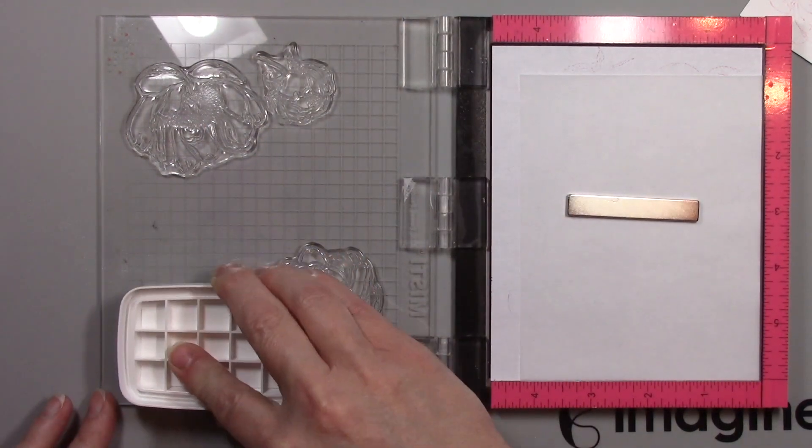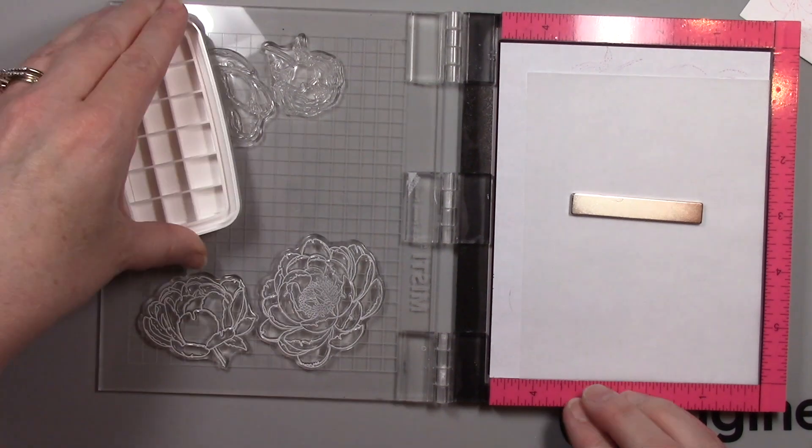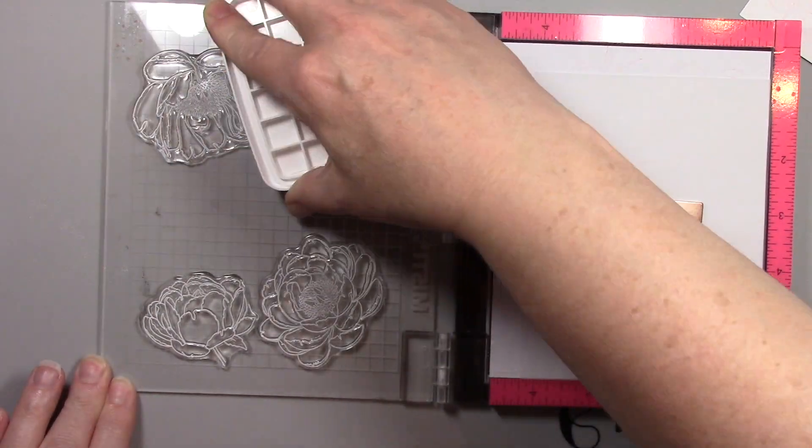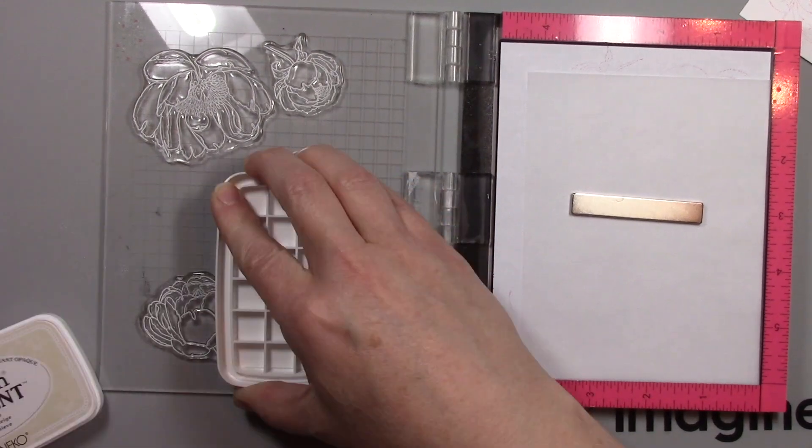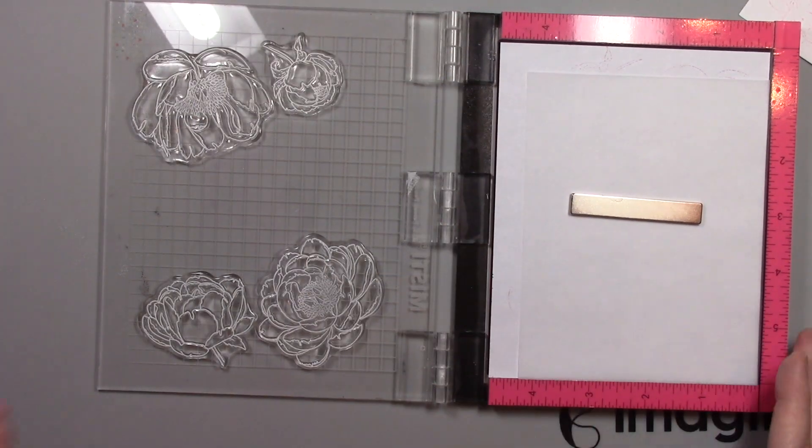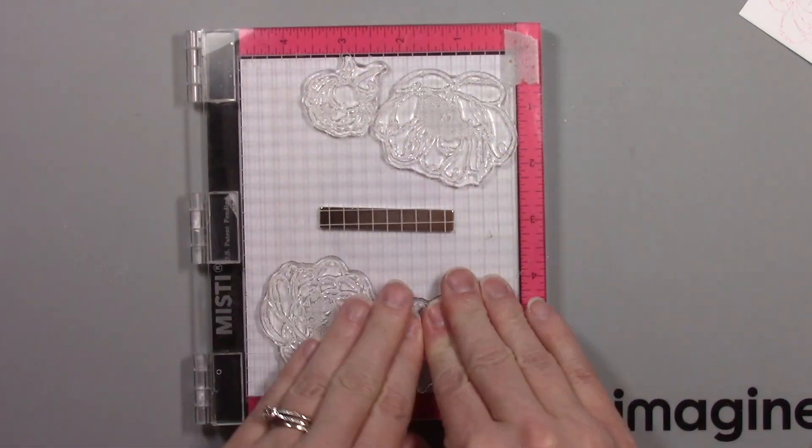Now I put my vellum inside my MISTI and I didn't change the position of those stamps and I'm using the Snowflake Pigment ink from Tsukineko. This ink is a little bit sticky but that is fabulous because it gives you a wonderful impression on your paper. You don't get any smearing.